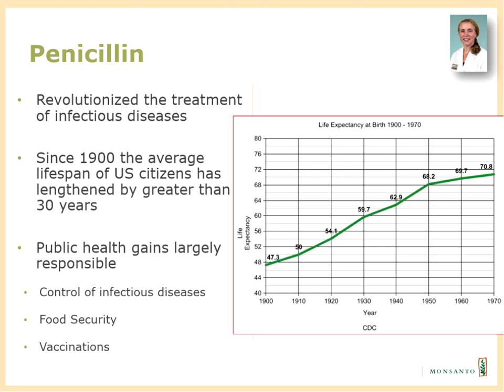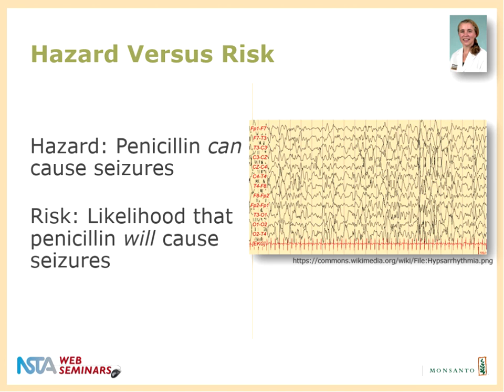Penicillin revolutionized the treatment of infectious disease. Since 1900, the average lifespan of US citizens has lengthened by greater than 30 years, largely due to public health gains — control of infectious diseases, food security, and vaccinations. When approaching chemicals, you want to think about the difference between hazard versus risk. Hazard is that penicillin can cause seizures — it's extraordinarily rare, maybe in super high doses or if put directly on the brain. The risk, on the other hand, is the likelihood that penicillin will cause seizures — very, very low — and the benefits of having an antibiotic like penicillin far outweigh any tiny risk that it may cause seizures.